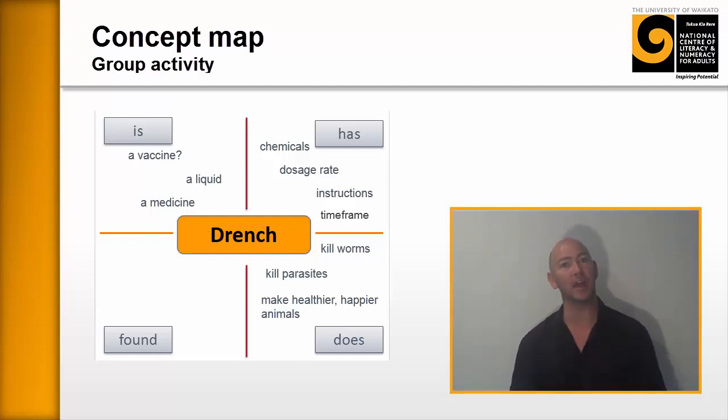And then we'll move on to location or drench is found. Drench is found on cattle farms, sheep farms, dairy farms. It's found in vet clinics. It's found in a variety of places and we'd get them to write that in there as well.